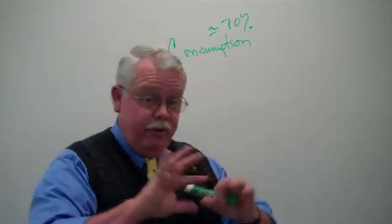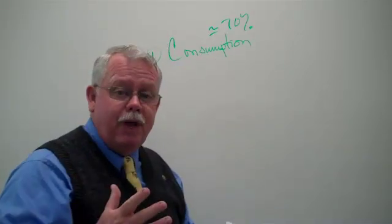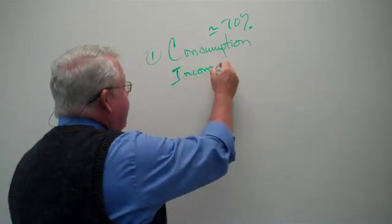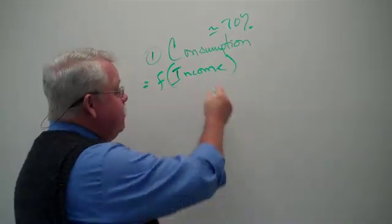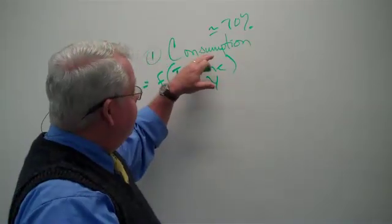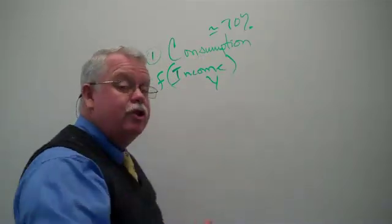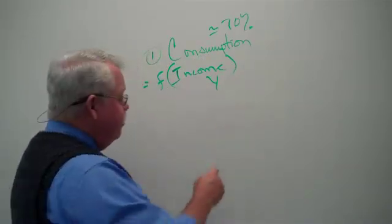In the United States economy, somewhere close to 70% of our economy in healthy times comes from the spending by households, by consumers, on durable goods, non-durable goods, automobiles, beer, pizza, whatever. Consumption is essential. Now, what do we know about consumption? Very quickly, we know that the driving force behind how much money you or I spend is our income. So we say consumption is a function of our income level, and we abbreviate income with the letter Y. When we translate this consumption behavior into numbers, we have what we call the consumption function, and it's usually stated something like this.